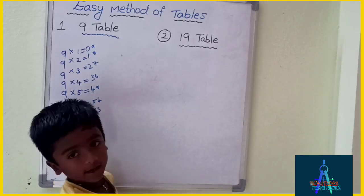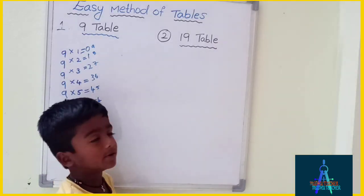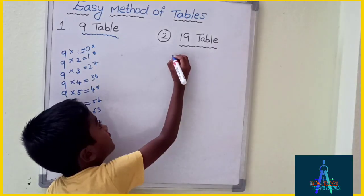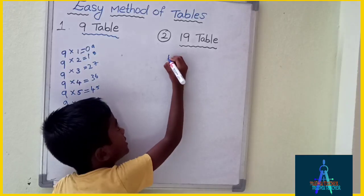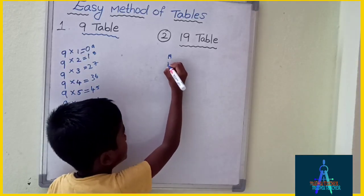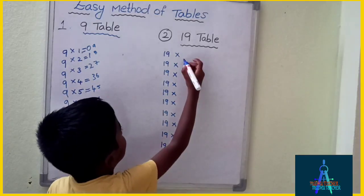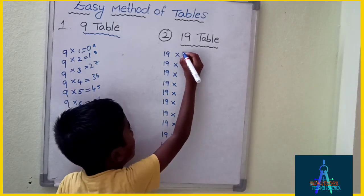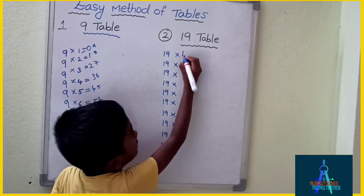Nineteen times table — simple method. First you write 19 ten times. Write 1 to 10.